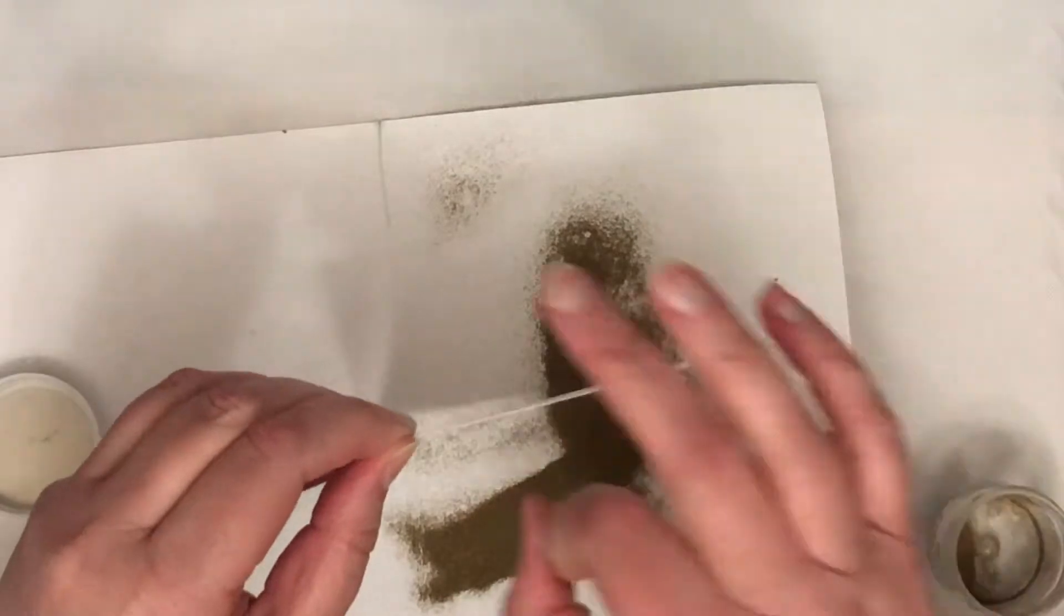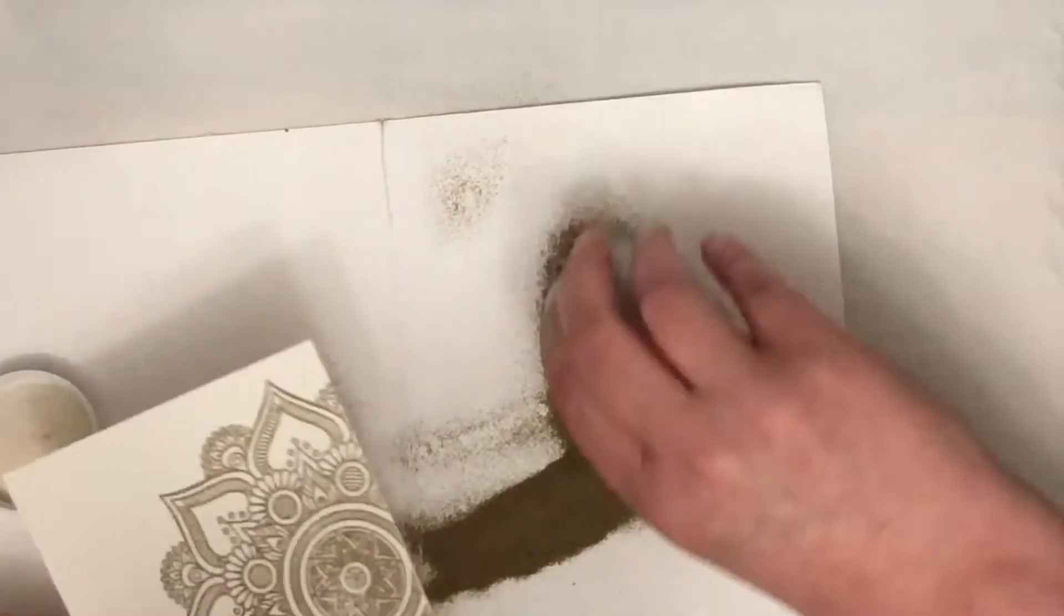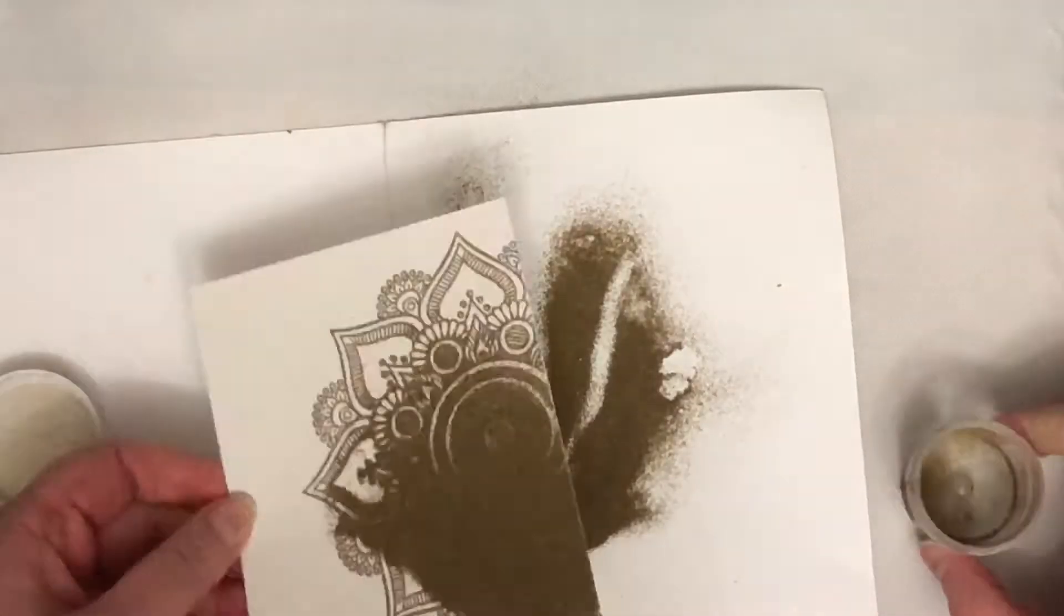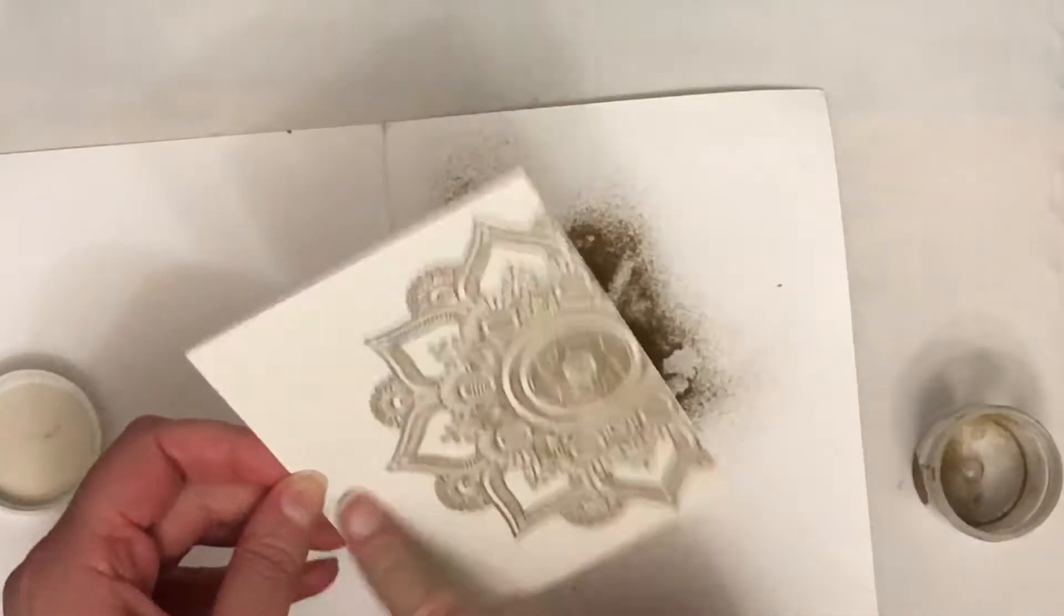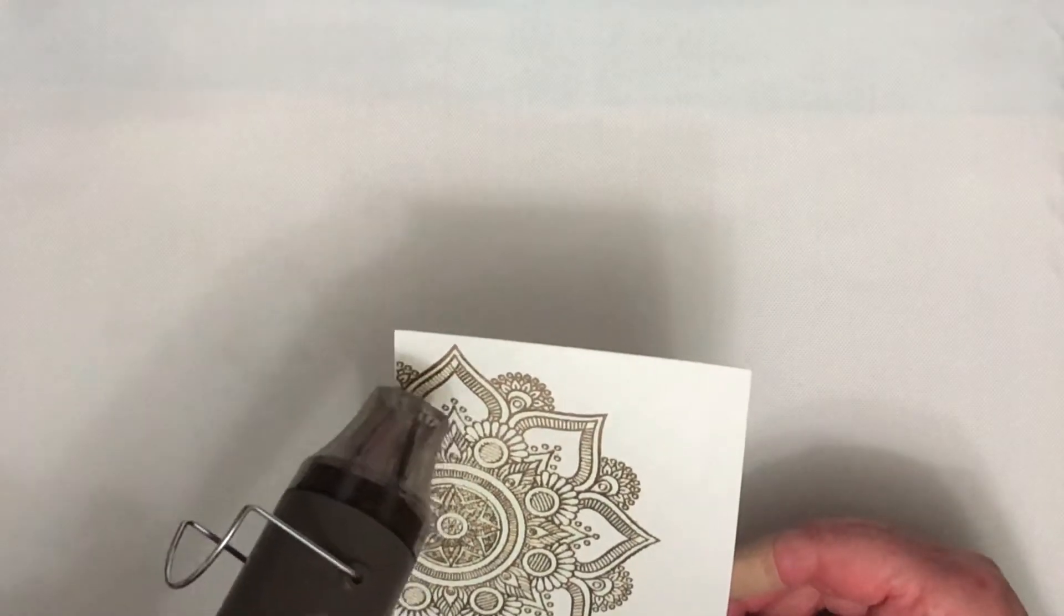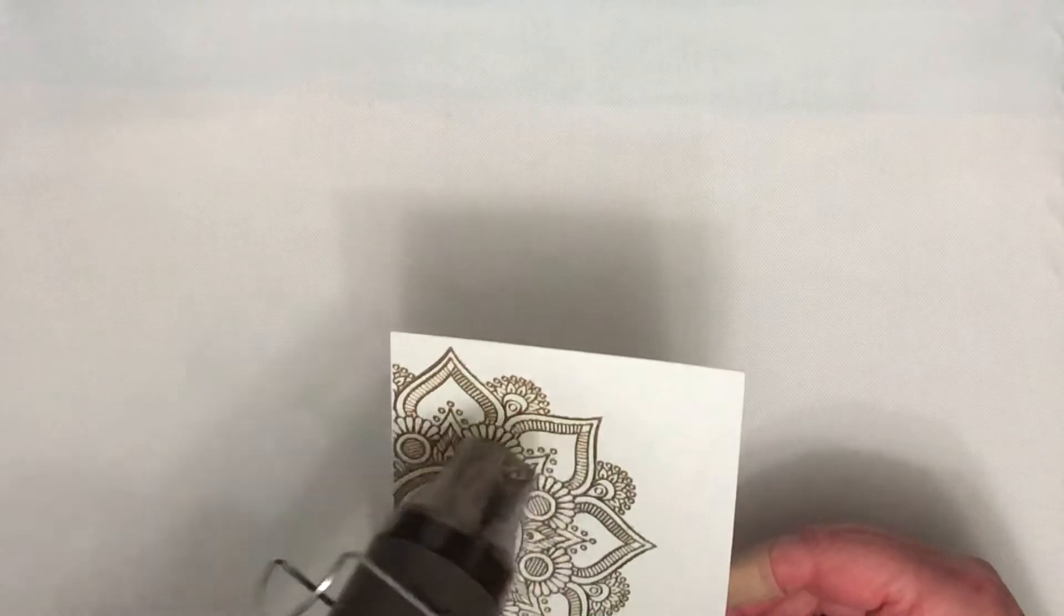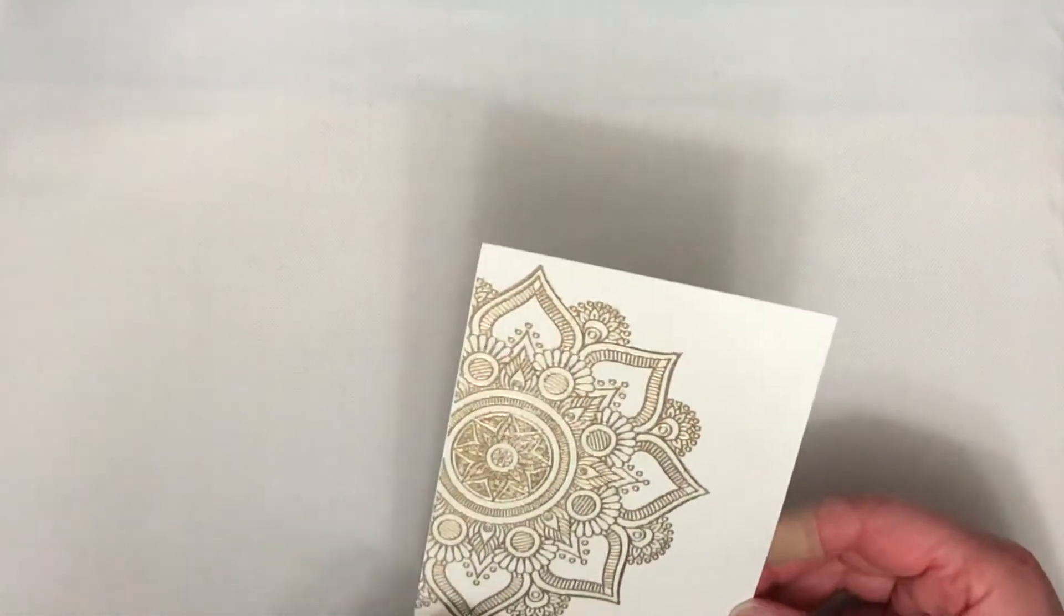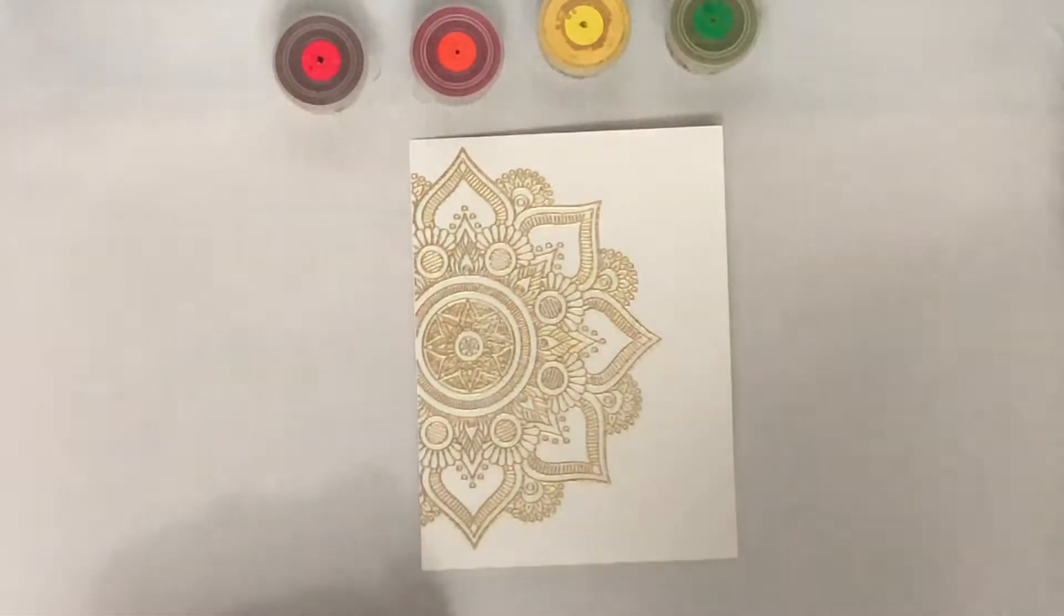Now I'm actually using some gold embossing powder today which is against my usual style. I very often use white embossing powder but I thought I'd try something different today. This embossing powder is from Hero Arts and here I am heating it up with my heat tool to make sure it is all melted. You can see that I've now got a lovely shiny mandala image with this gold embossing.